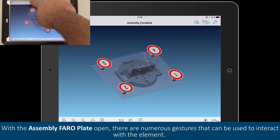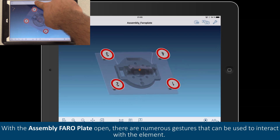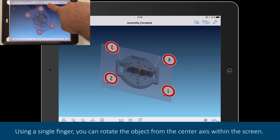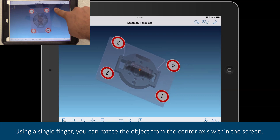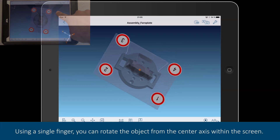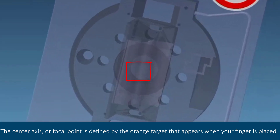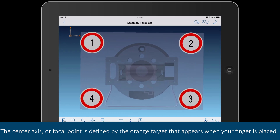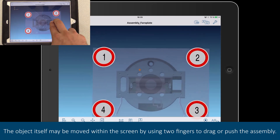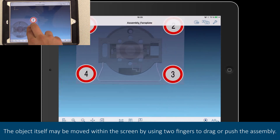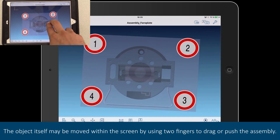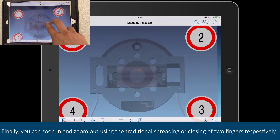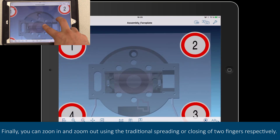With the assembly Ferro plate open, there are numerous gestures that can be used to interact with the element. Using a single finger, you can rotate the object from the center axis within the screen. The center axis, or focal point, is defined by the orange target that appears when your finger is placed. The object itself may be moved within the screen by using two fingers to drag or push the assembly. Finally, you can zoom in and zoom out using the traditional spreading or closing of two fingers, respectively.